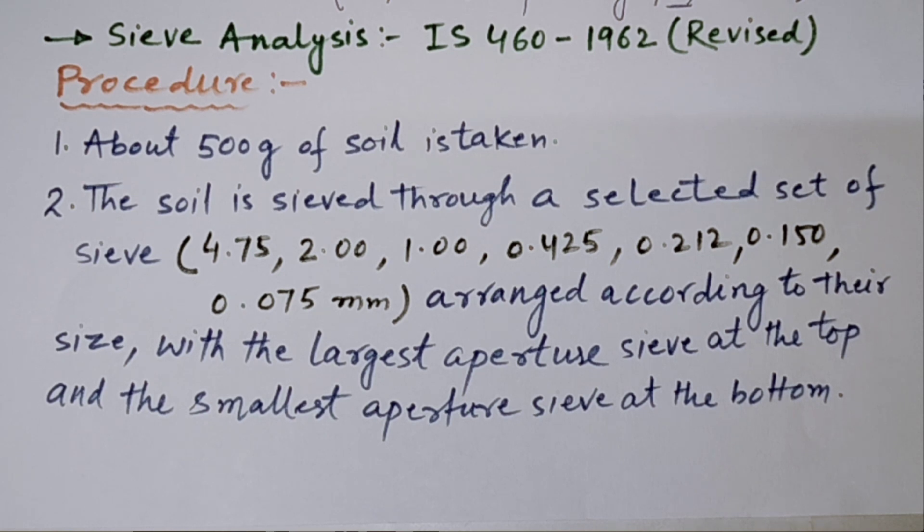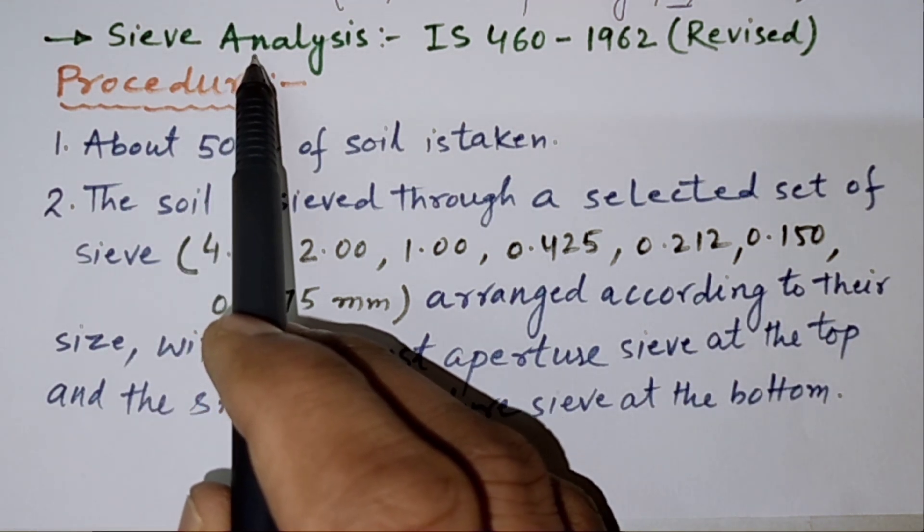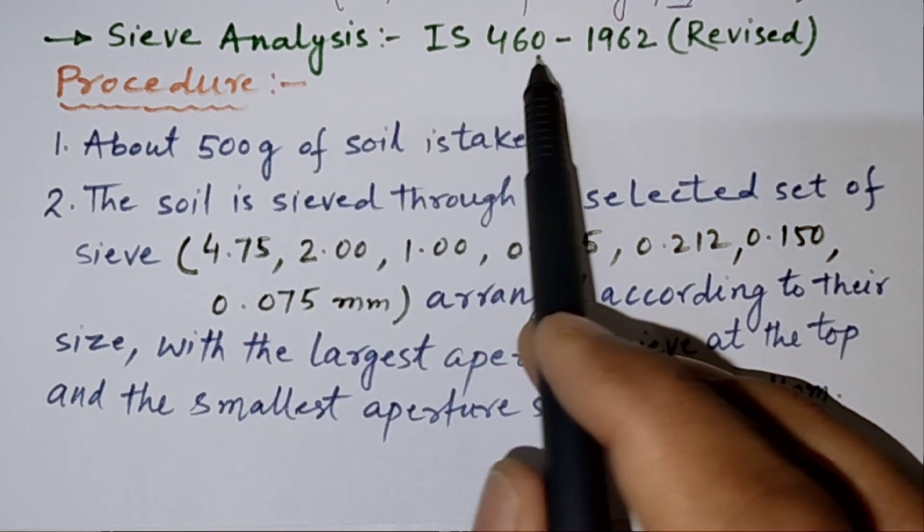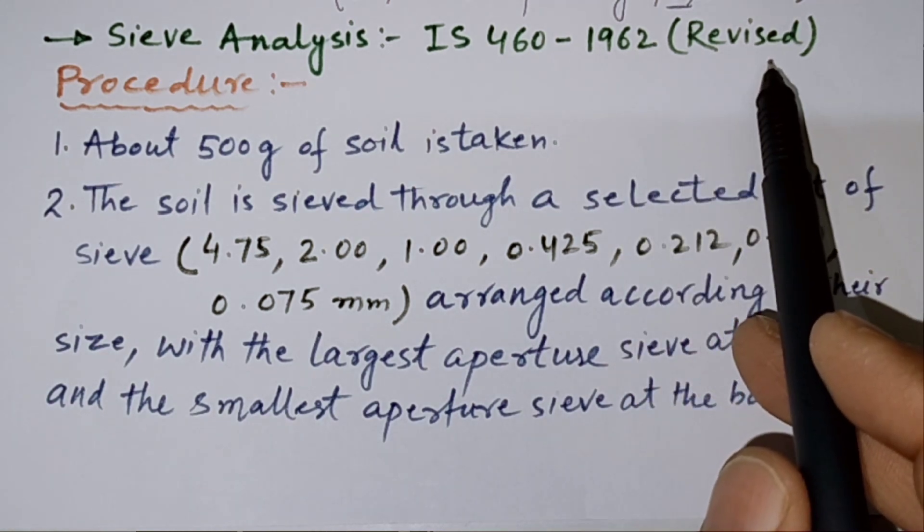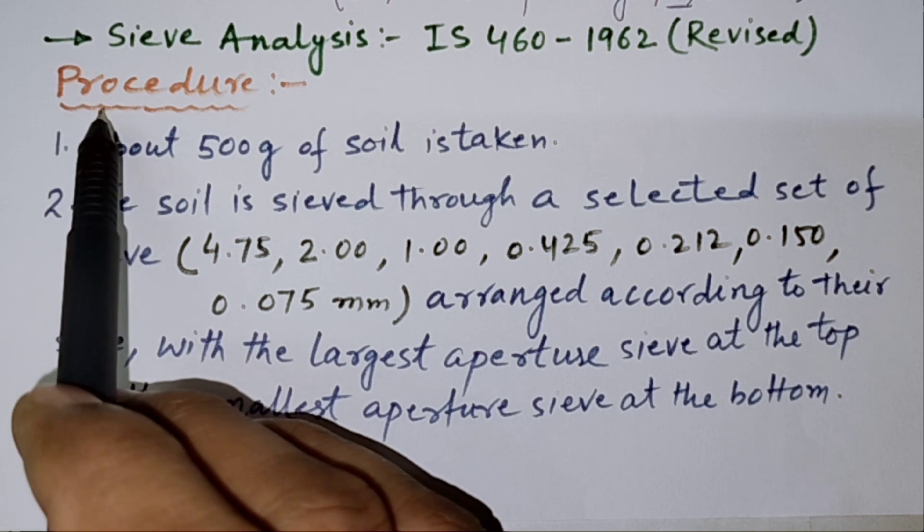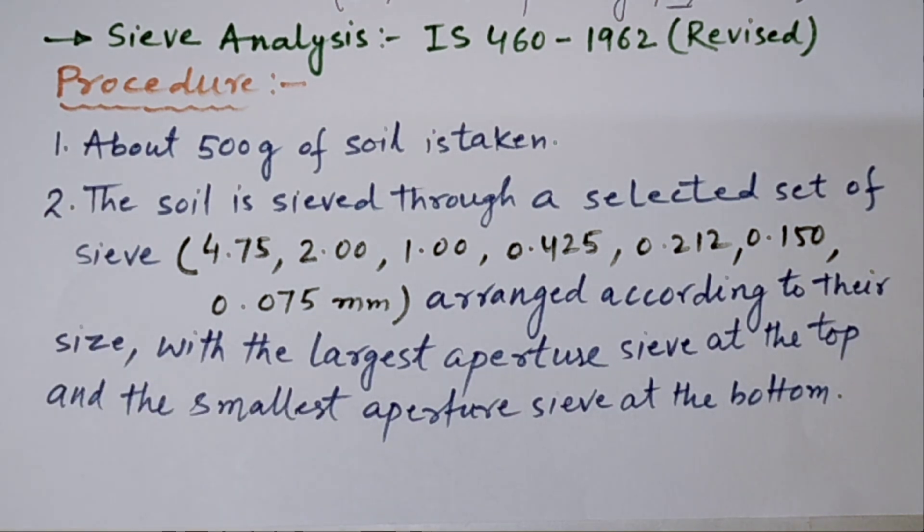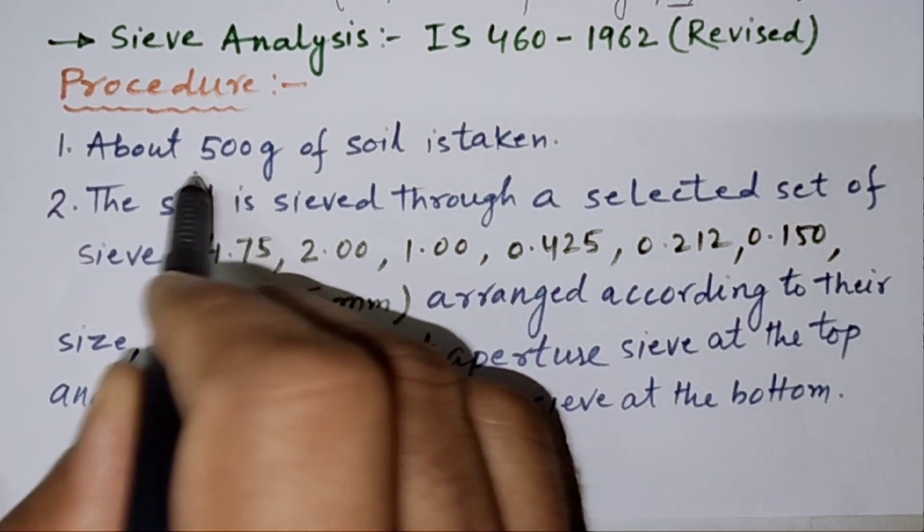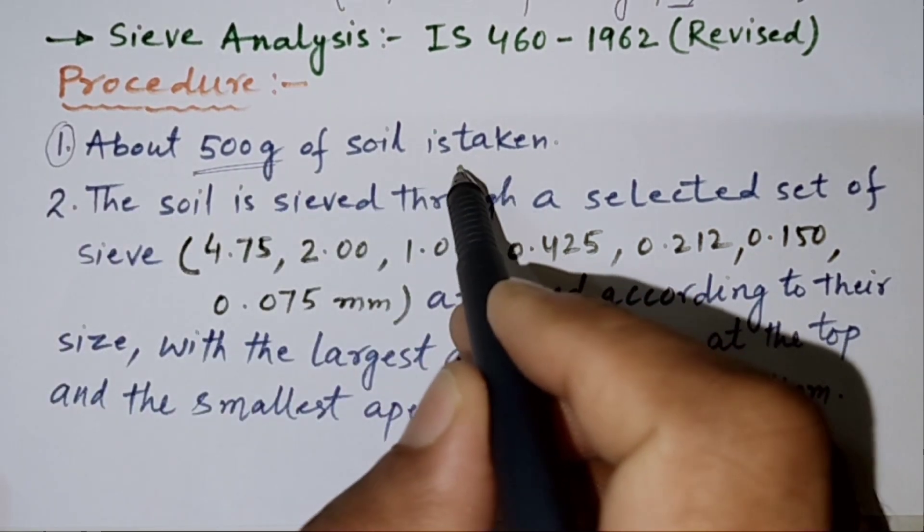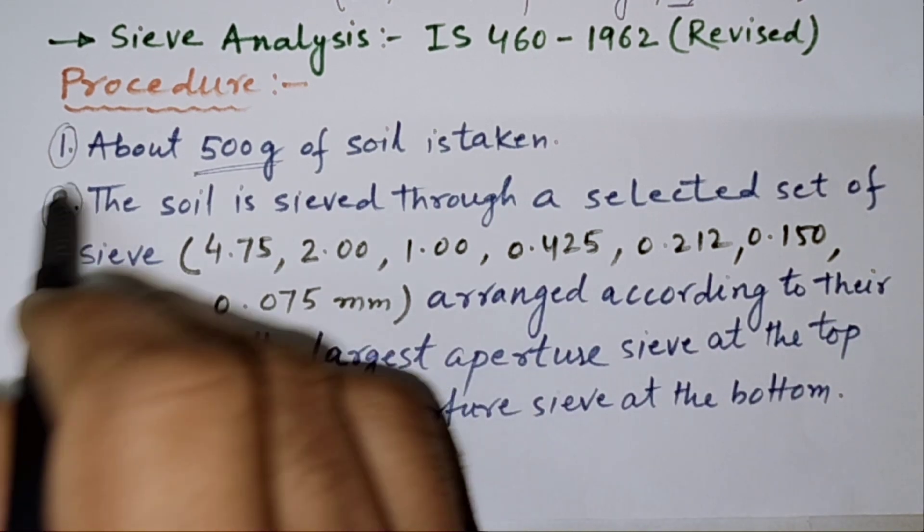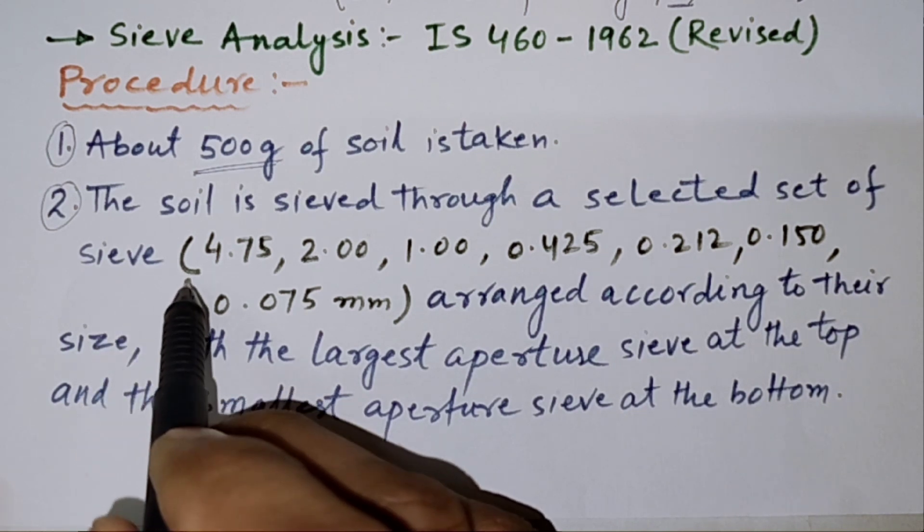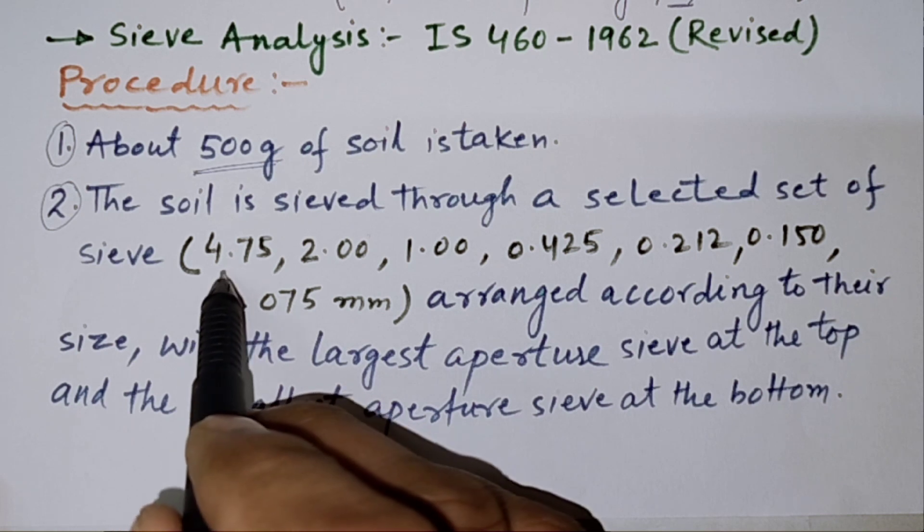In this lecture, we will discuss in detail the sieve analysis, the grain size of coarse grain soil. The I.S. code applicable for this sieve analysis is I.S. 460 1962 revised. The procedure for this test is as below. First of all, we will take approximately 500 gram of soil. Now, this soil is sieved through a selected set of sieve as shown in the figure.